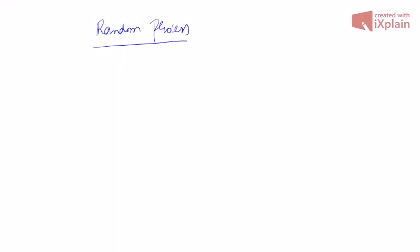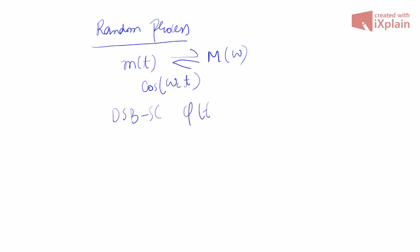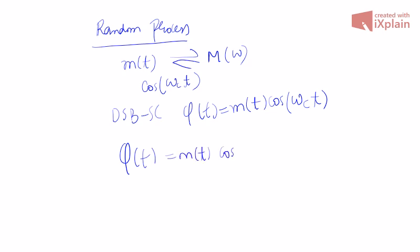Welcome to the next lecture on random processes. Today we will do one important example related to DSBSC. Suppose you have M of T as the message signal, which we want to transmit. It has M of omega as its Fourier transform and the usual cosine carrier signal. The DSBSC signal is represented as phi of T. Now we consider a practical case where we don't know the phase associated with the carrier, so we write the DSBSC signal as cos(omega_C * T + theta).